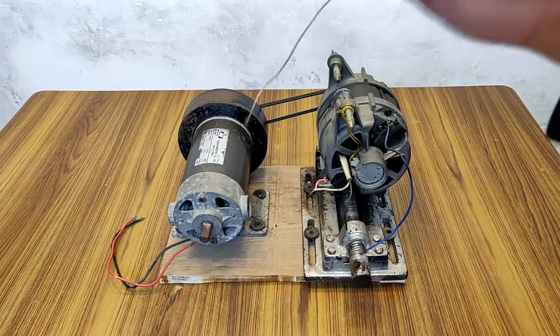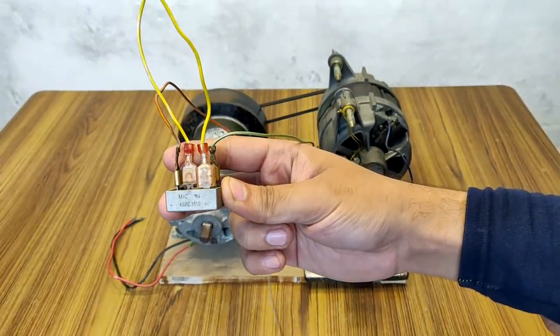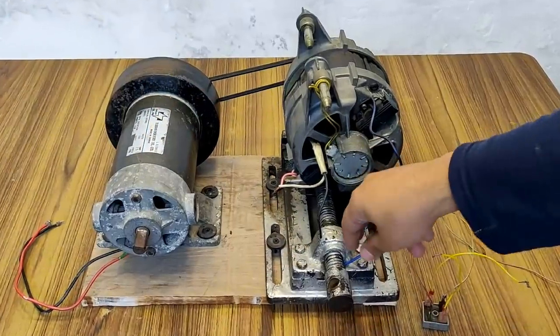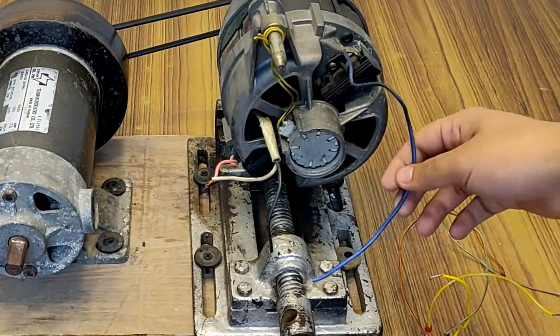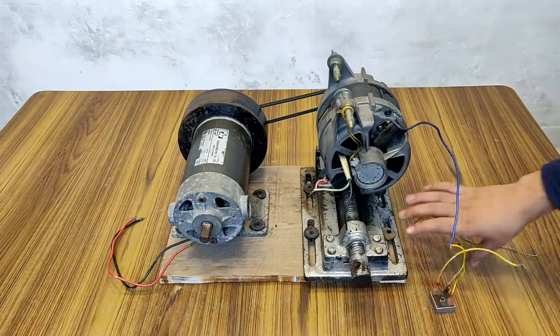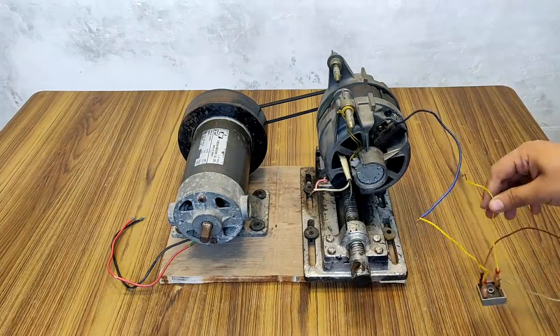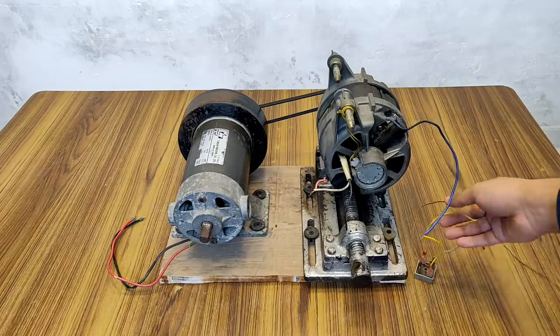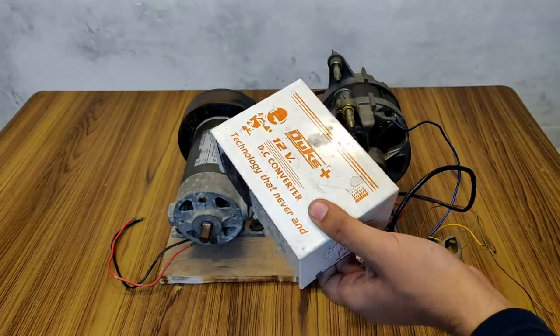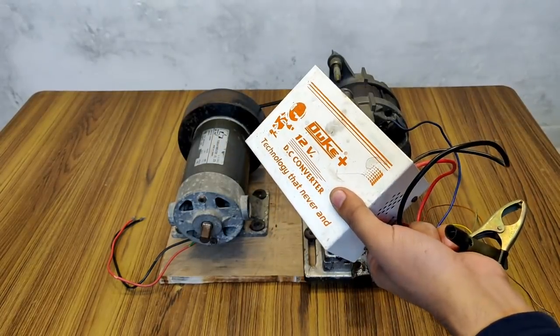So guys, first comes the connection of the bridge rectifier. You have to connect the AC terminals to any one of the two terminals that are left out, meaning not connected. Now, the other AC terminal will remain open. At the DC output terminals, this inverter or DC converter will be connected.